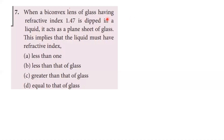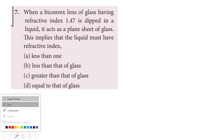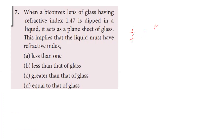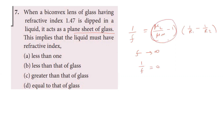When a biconvex lens of glass having refractive index 1.47 is dipped in a liquid, it acts as a plain sheet of glass. This implies the focal length is infinite, so 1/f equals 0. Using the lens maker's formula, mu_lens divided by mu_medium minus 1 equals 0, giving mu_lens equals mu_medium. The refractive index of the liquid must equal that of the glass, which is 1.47.